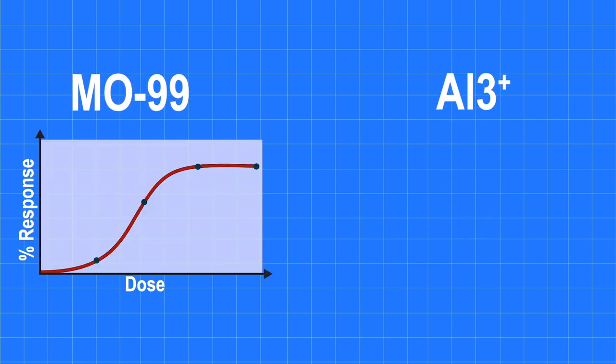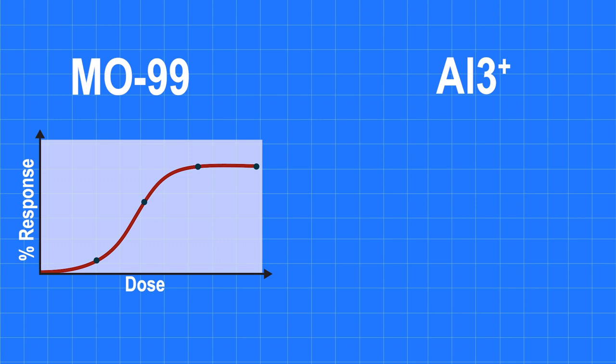Two impurities may be present in the eluted solution, molybdenum and aluminum ions. Excess molybdenum will increase the patient dose without providing benefit. Quality control tests are performed to rule out the presence of these contaminants.